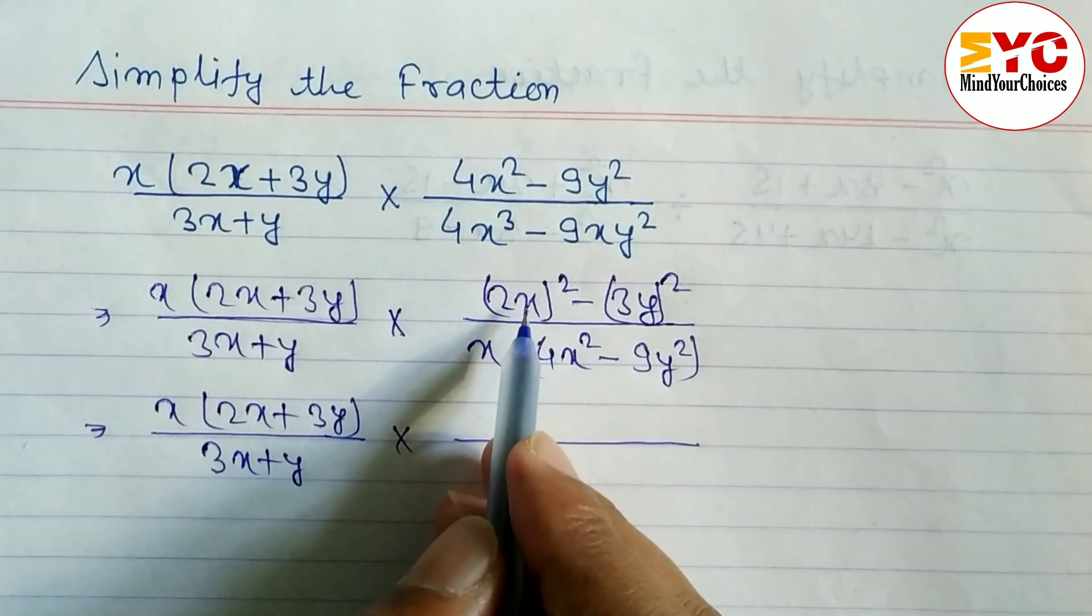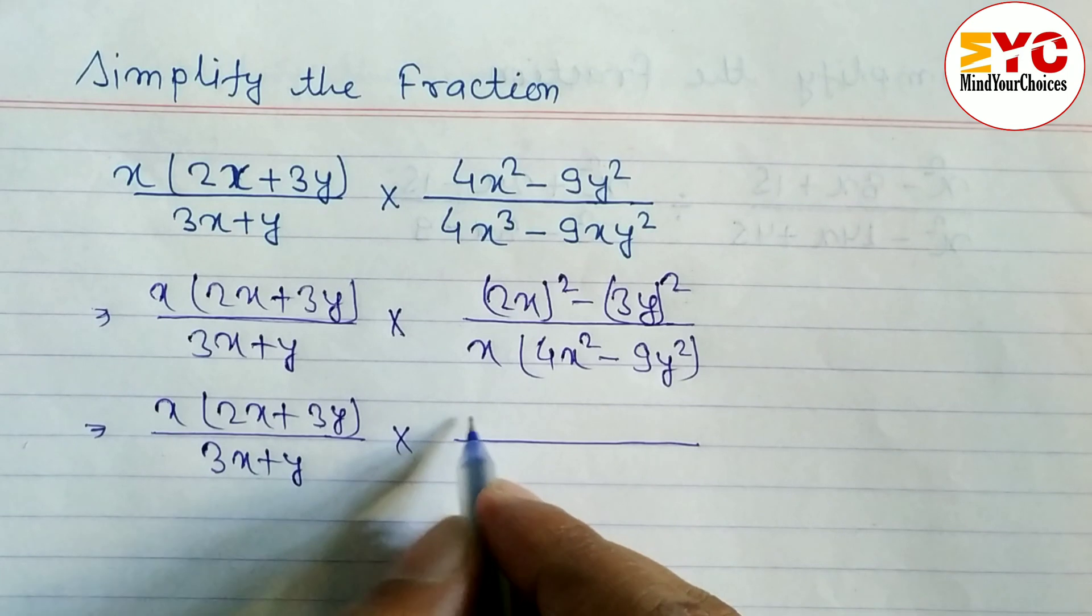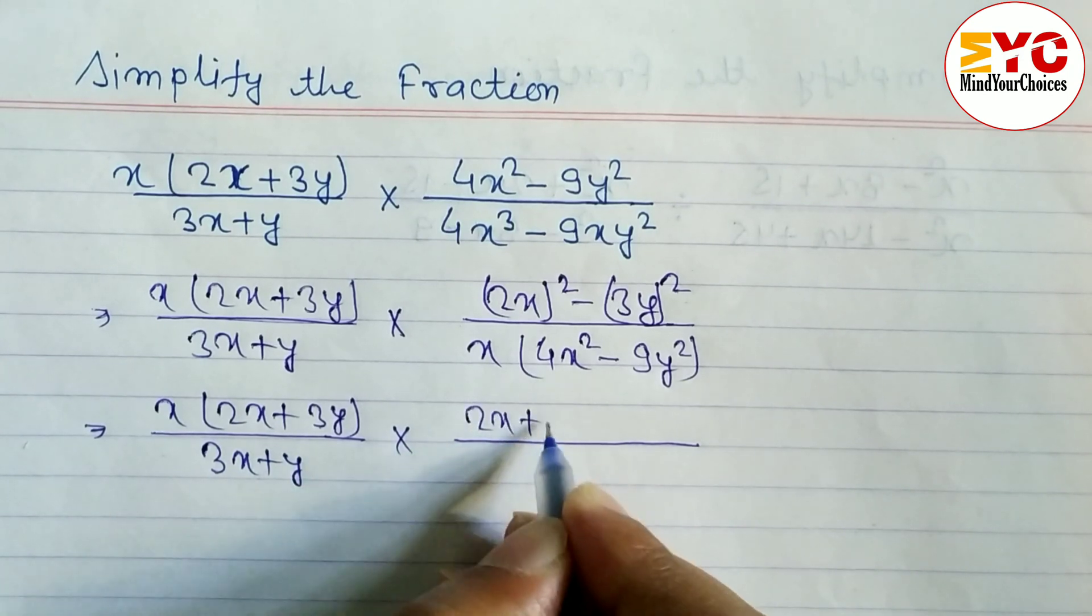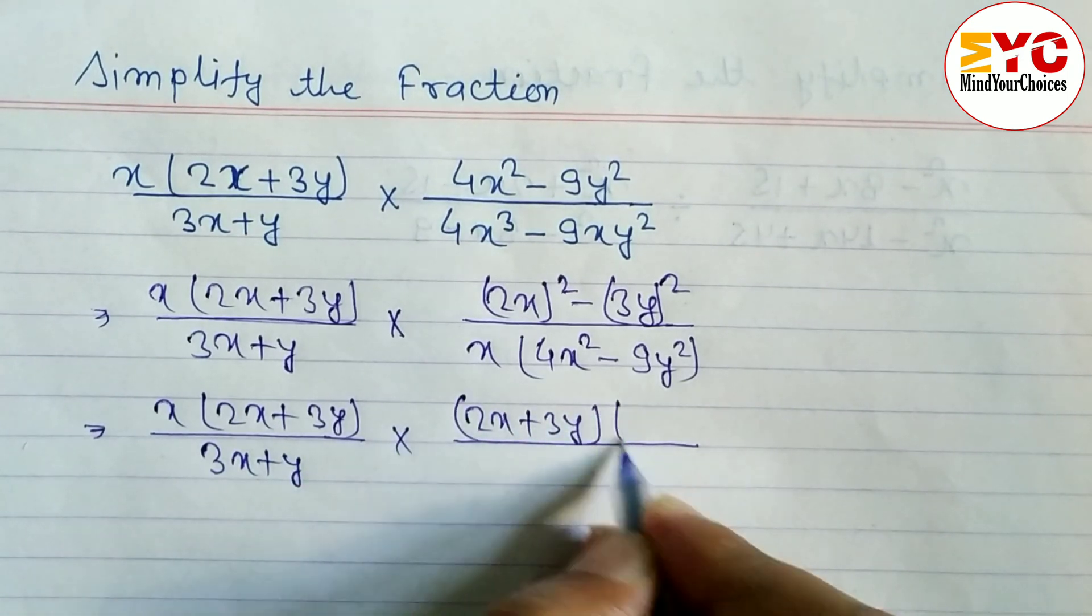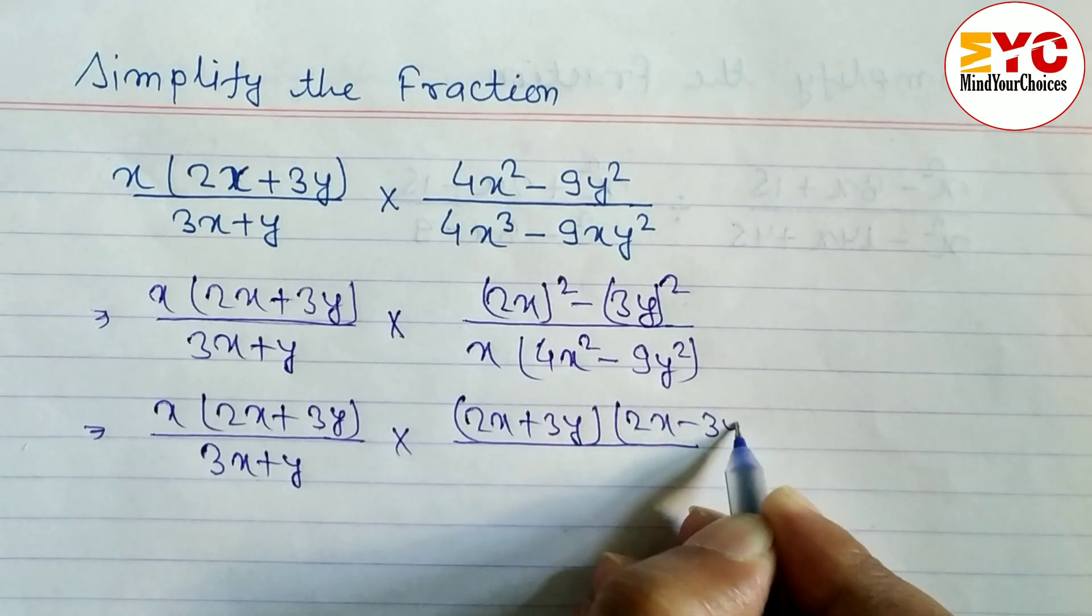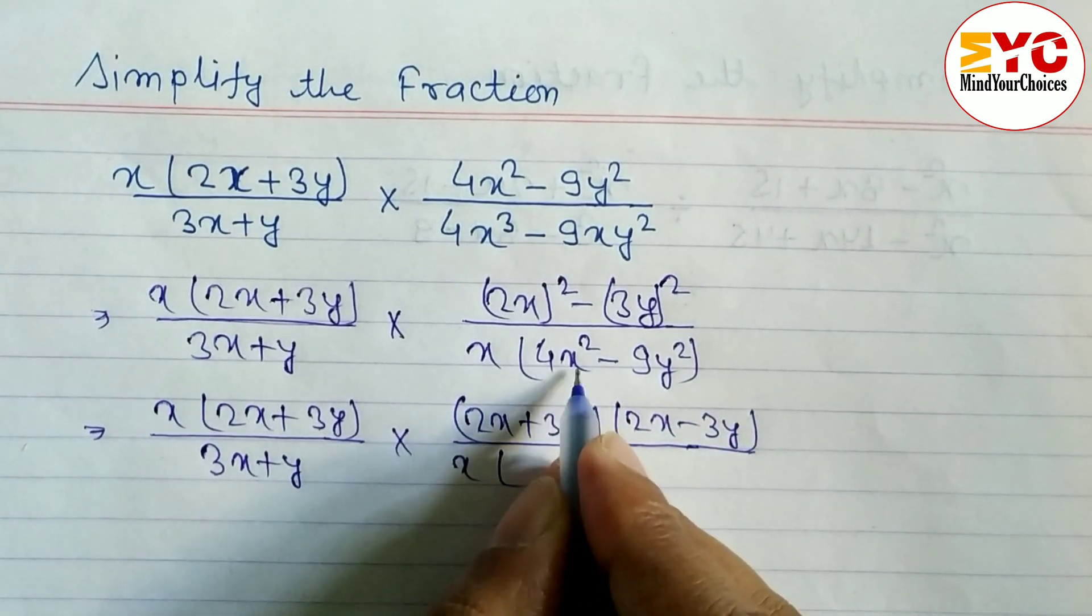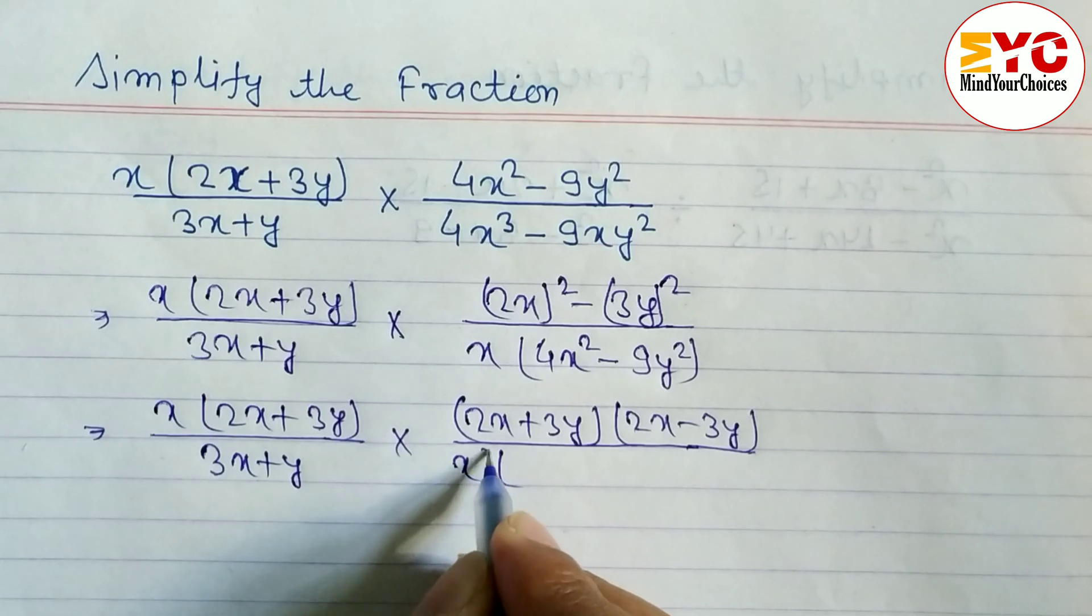We have to use formula here. A squared minus b squared formula we can use here: 2x plus 3y times 2x minus 3y. In denominator also, same, we have to convert this in the form of a squared minus b squared.